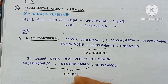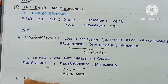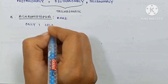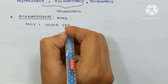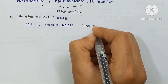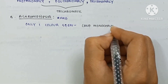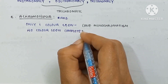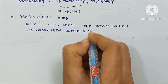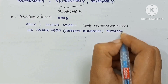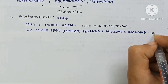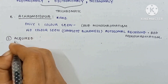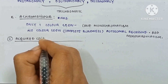The second type is achromatopsia, which is very rare. If only one color is seen, it is known as cone monochromatism. If no color is seen — that is complete color blindness — it is an autosomal recessive disorder known as rod monochromatism. Then there is also acquired color blindness.